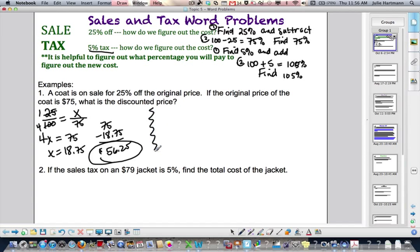Now, looking at it the other way, if it's 25% off, I really am going to pay 75%. So, 75 over 100 is, and I'm looking on a coat of $75, is my x. Reduce here. 25 goes in 3 times.